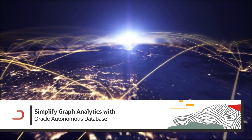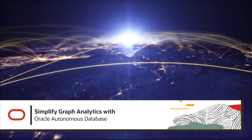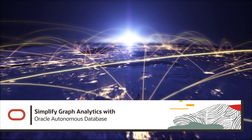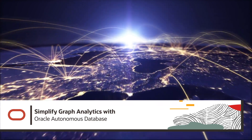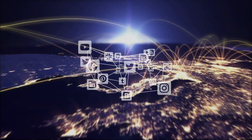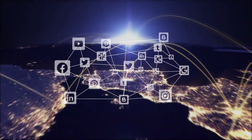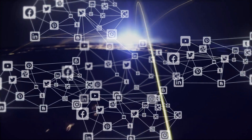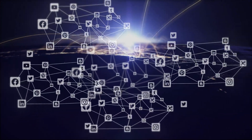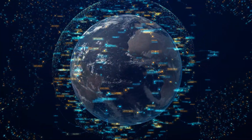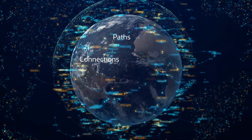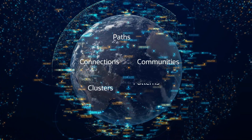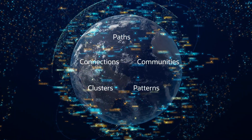In a highly connected world where social networks and complex supply chains are the way people and businesses interact, graphs are a better way to look at and understand how things are related to one another. Graphs are designed to reveal paths, connections, communities, clusters, and patterns in data.